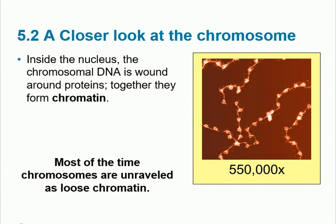Chromatin and chromosome are almost the same — it just depends on how tightly coiled it is. When it's loose it is chromatin; when it's tightly coiled it is a chromosome. The vast majority of the time it stays loose. It will become tightly coiled only during reproduction — during cell division. When division is done, it goes back to being loose chromatin.